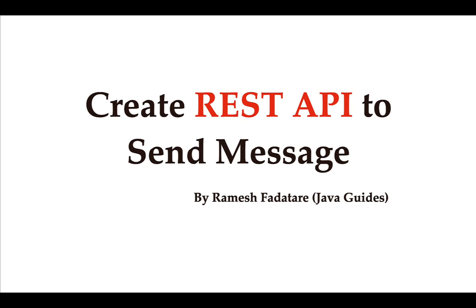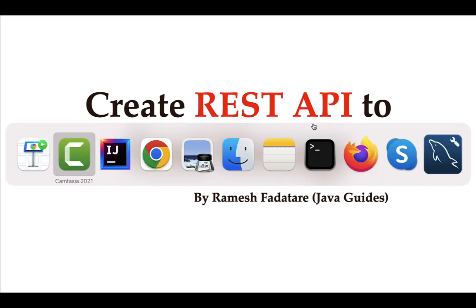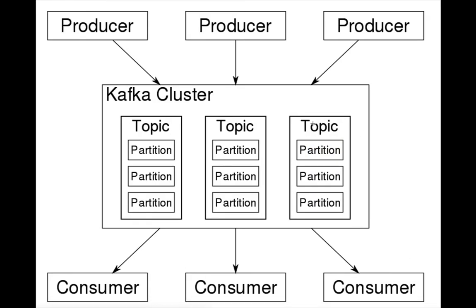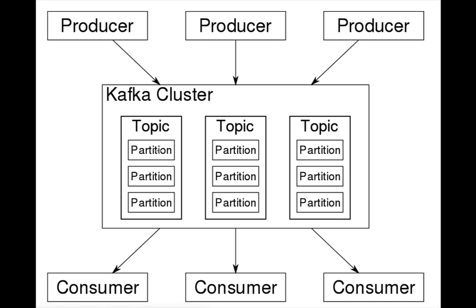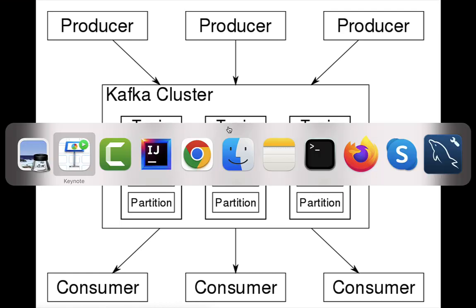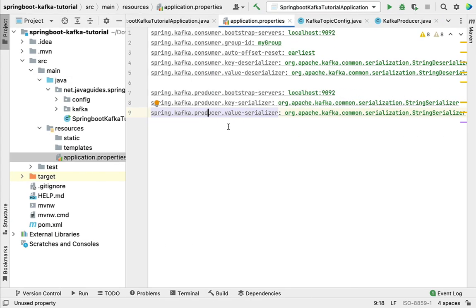Hi, welcome back. In this lecture we'll create a REST API to send a message to the Kafka producer. If you can see the Kafka architecture over here, in the previous lecture we created a Kafka producer. In this lecture we'll create a REST API to send a message to the Kafka producer, and then the Kafka producer will send that message to the Kafka topic. Let's head over to IntelliJ IDEA.